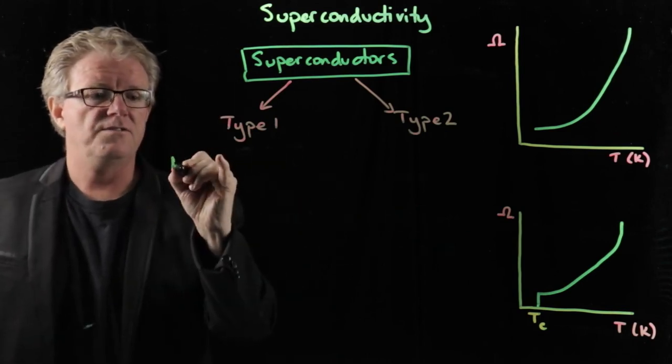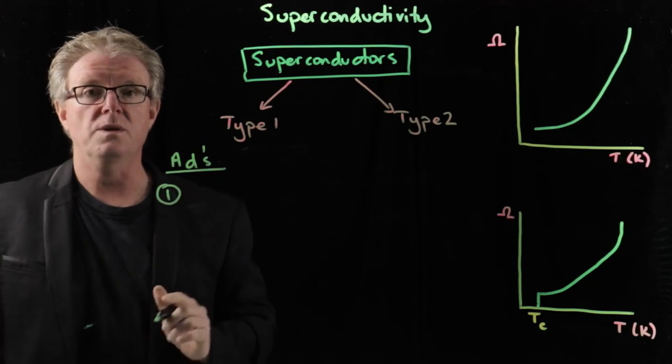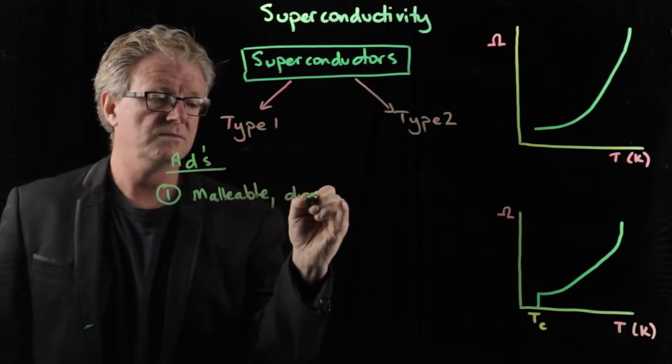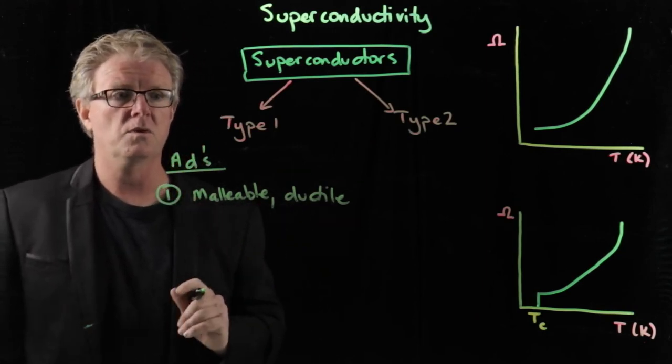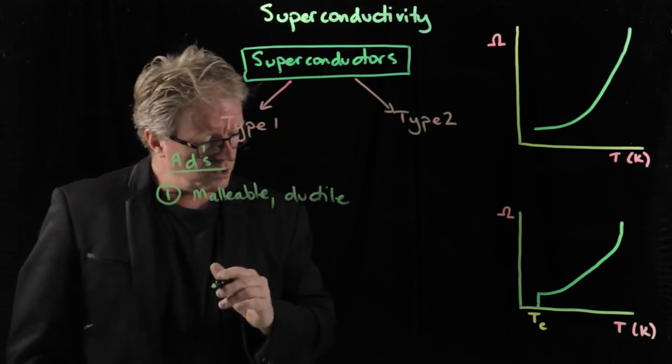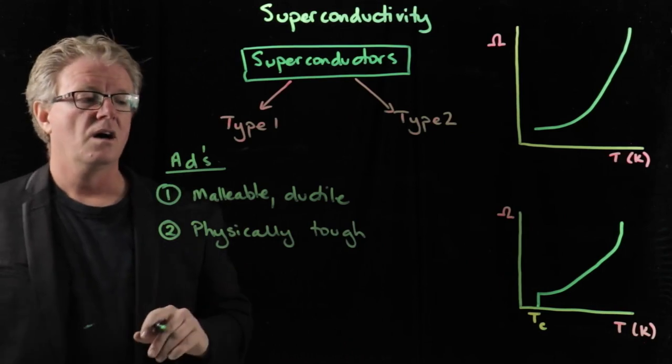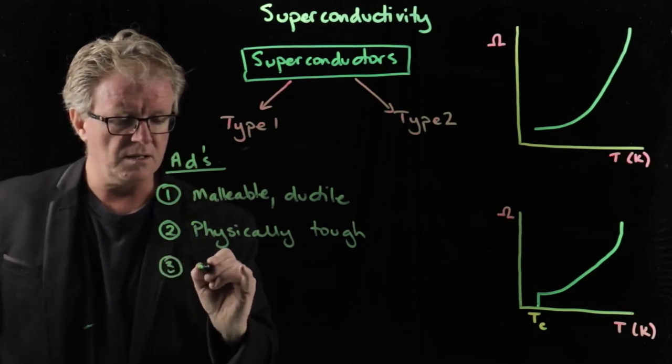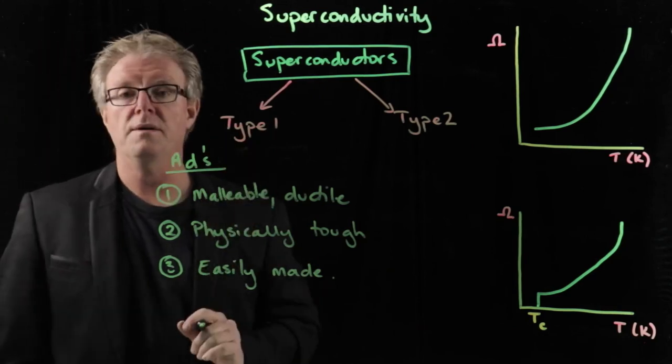Let's look at the advantages. The advantages of Type 1, first of all, is that they're easy to work with. They're metals, so therefore they're malleable and ductile. So we can draw them into wires, which is perfect if we wanted to look at making circuit boards or incorporate them in transmission wires. So ductile and malleable, perfect. They're easy to work with. They are physically tough, so they stand up to the rigors of environmental conditions. And the third one is that they're easily available or easily made. So there are the advantages of this Type 1 of the metals.